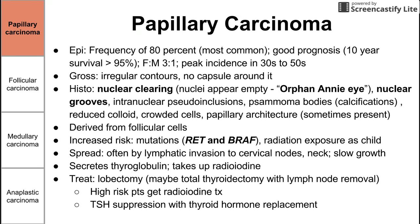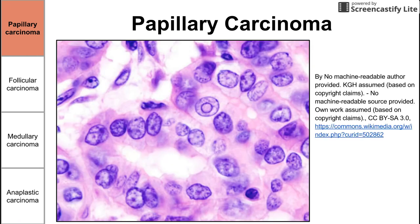After surgery and radioiodine, patients might also get TSH suppression — thyroid hormone replacement to suppress TSH from further activating the thyroid, preventing the cancer from growing further. On histology, these are the orphan Annie eyes — you can see one in the middle, kind of looks like an eye. You can also see nuclear grooves, where the nuclear material aggregates into a darker line.